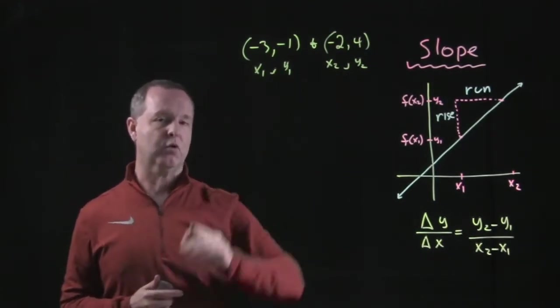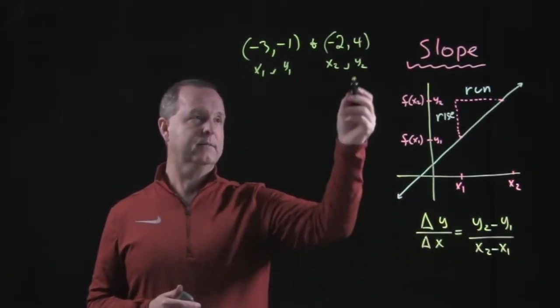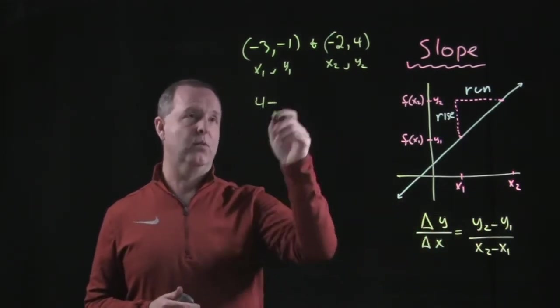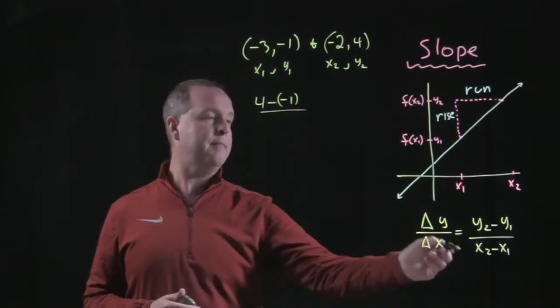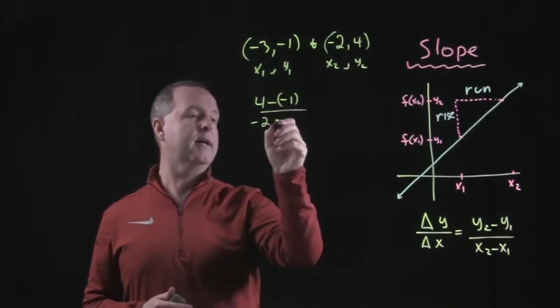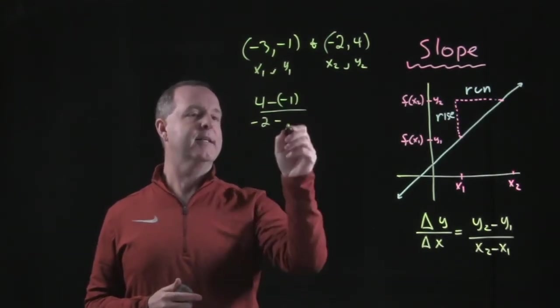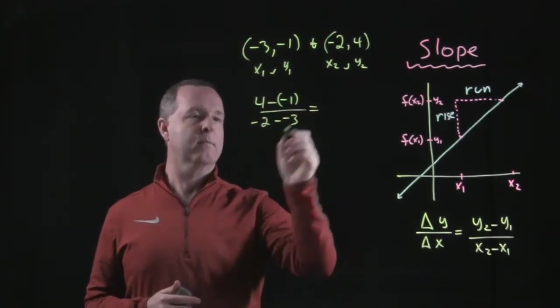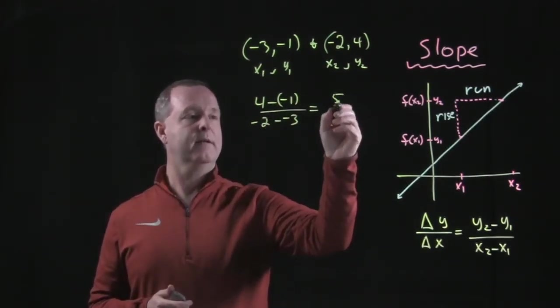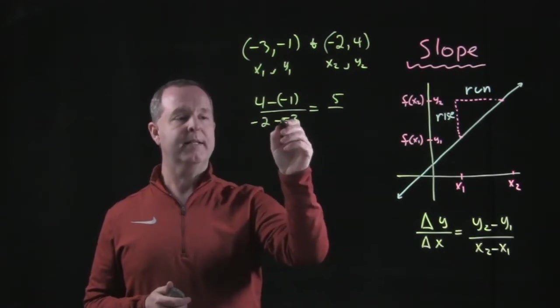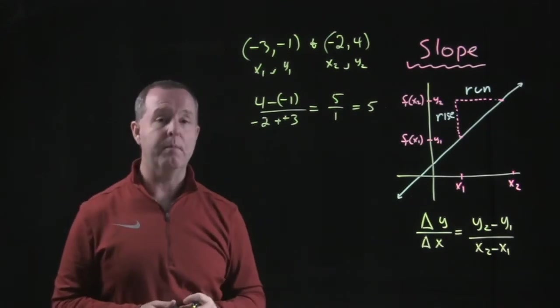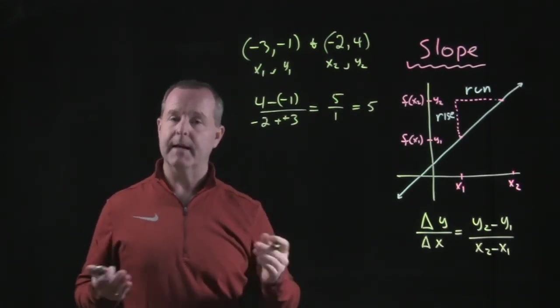So based on these subscripts, I want to take one value of y, subtract it from the other coordinates y, divide it by x2, which is a negative 2 in this case, minus a negative 3. Reduce that down, 4 minus a 1 is a 5, negative 2 minus a negative 3 is a 1. So the slope between those two points is 5.